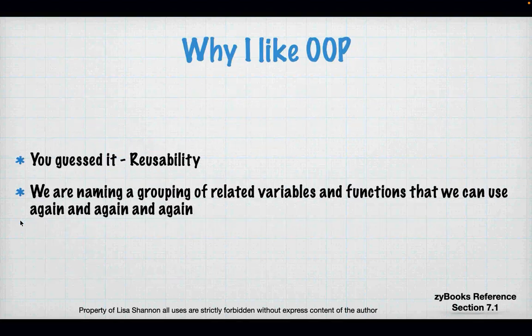Polymorphism lets you access objects of different types through the same interface. Essentially, you've defined a set of function calls in your class, and when you use inheritance, different things can happen in a function of the same name. Polymorphism and inheritance are meant to work hand in hand. We won't go into that depth in this class, but I want to introduce you to the concept and terminology.